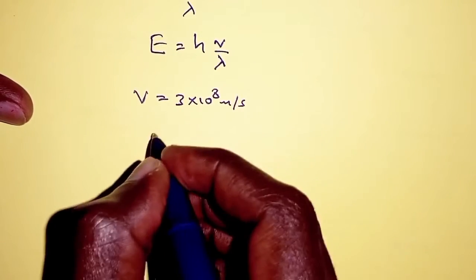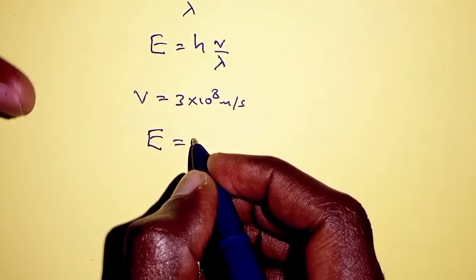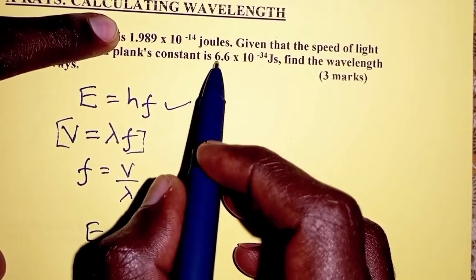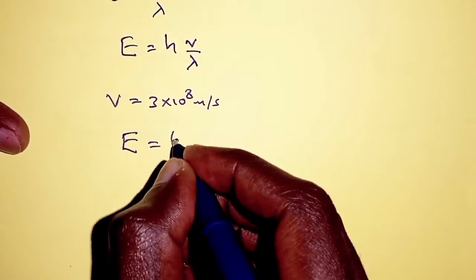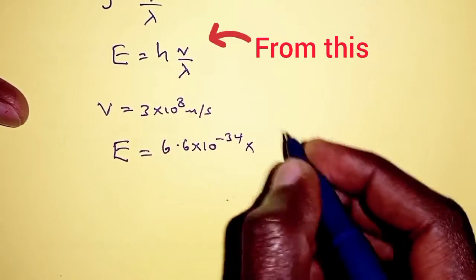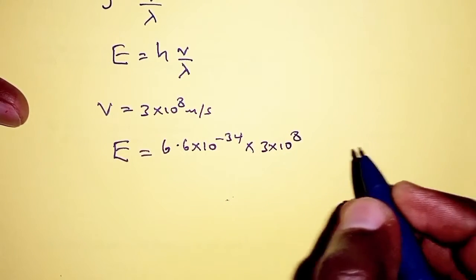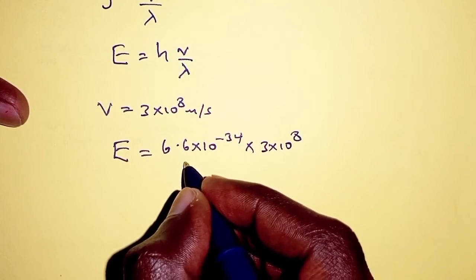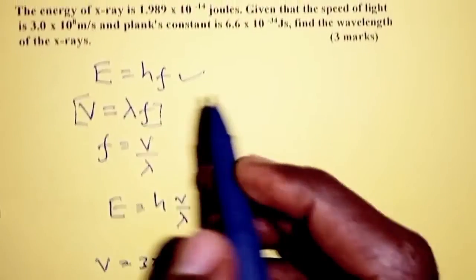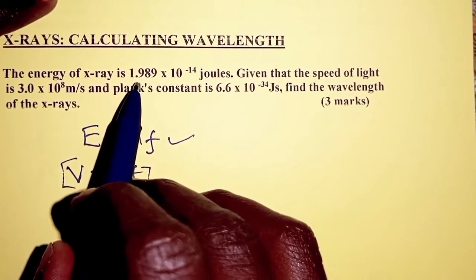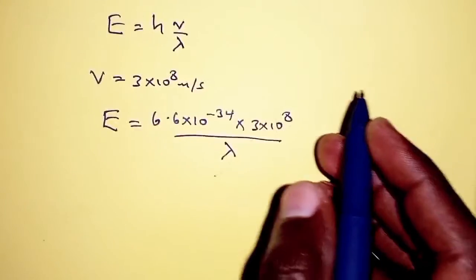Doing our substitutions, the energy should be equal to Planck's constant 6.6 times 10 power negative 34 joules second, multiplied by the velocity of light 3 times 10 power 8, divided by lambda. And that should equal the energy 1.989 times 10 power negative 14 joules.